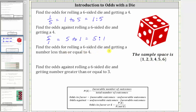Next, we're asked to find the odds for rolling a six-sided die and getting a number less than or equal to four. Going back to the sample space, the favorable outcomes are the numbers less than or equal to four: one, two, three, and four. The unfavorable outcomes are five and six. Therefore, the odds in favor of getting a number less than or equal to four are four to two. Notice how the ratio of four to two does simplify, because four and two share a common factor of two. Dividing both by two gives us the ratio of two to one, which can be written in three different ways.